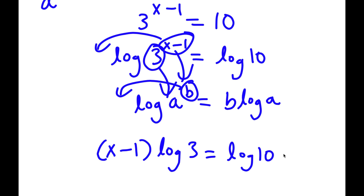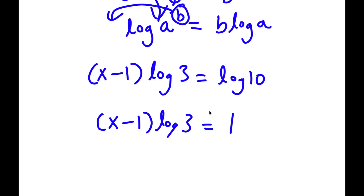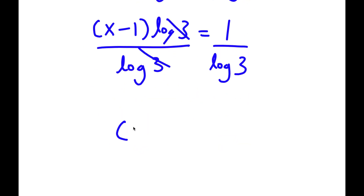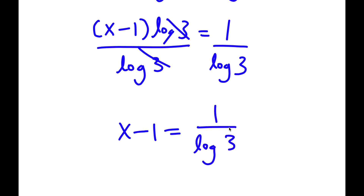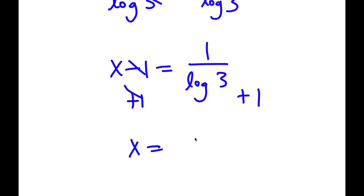So now to continue solving this, log 10 is the same thing as 1. So now I have x minus 1 times log 3 is equal to 1. If I divide both sides by log 3, I get x minus 1 is equal to 1 over log 3. So now if I add 1 on both sides, those cancel out and I'll be left with x is equal to 1 over log 3 plus 1.